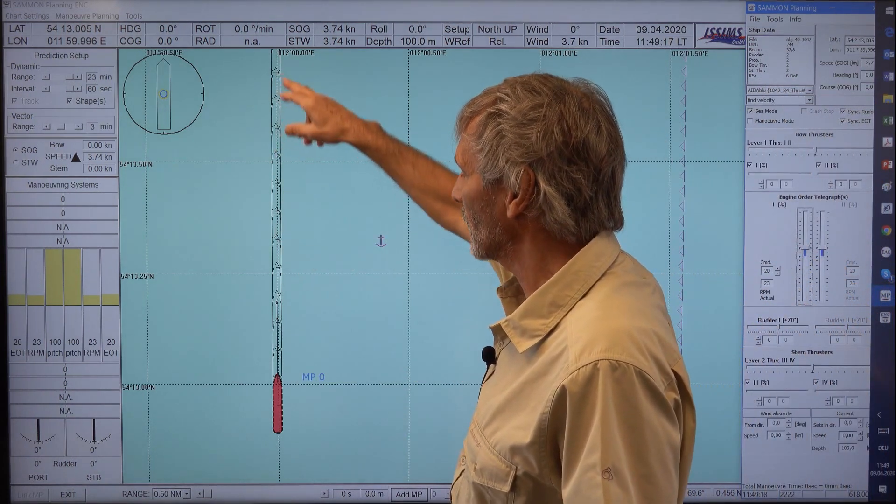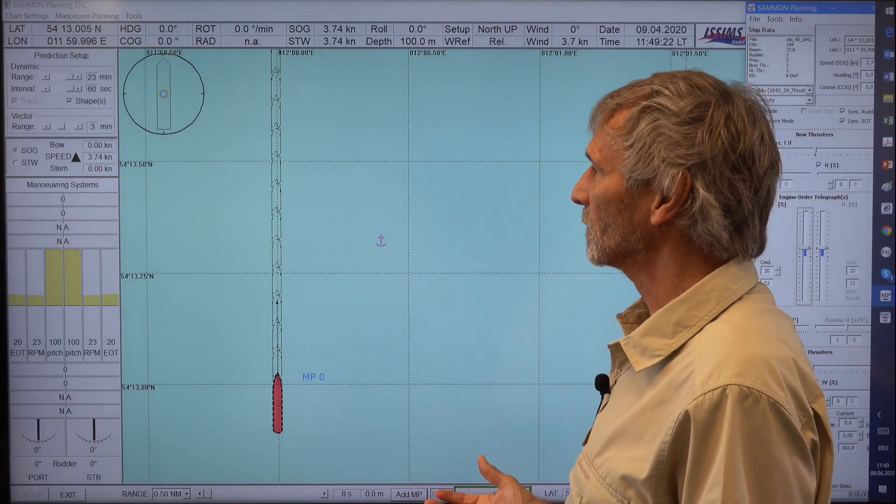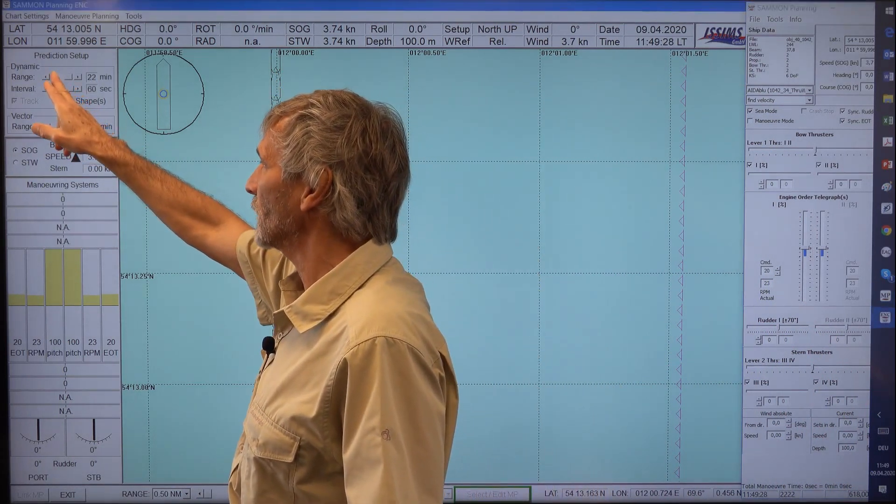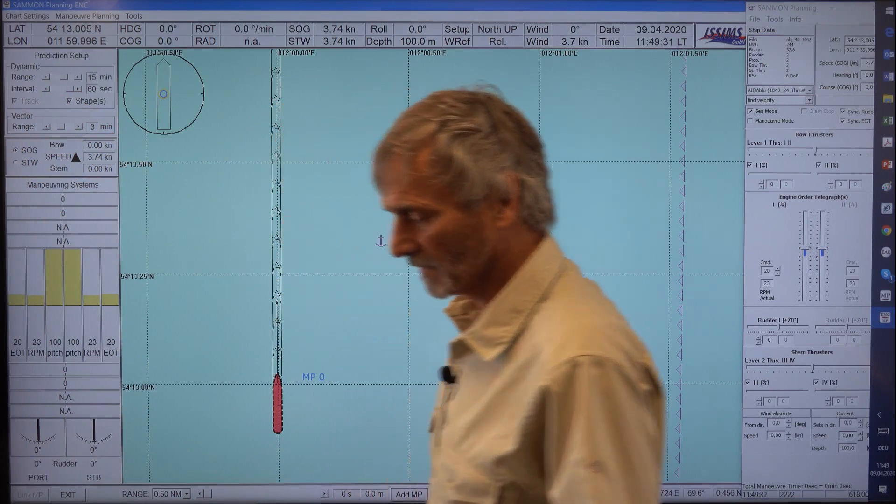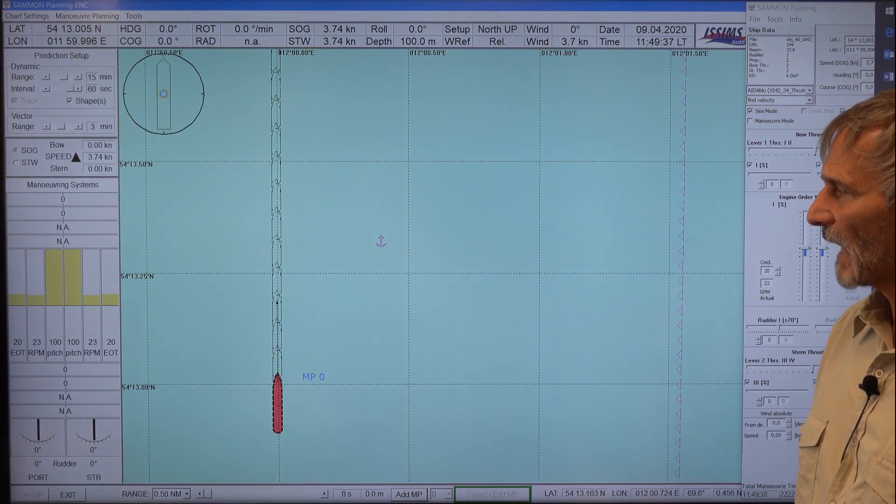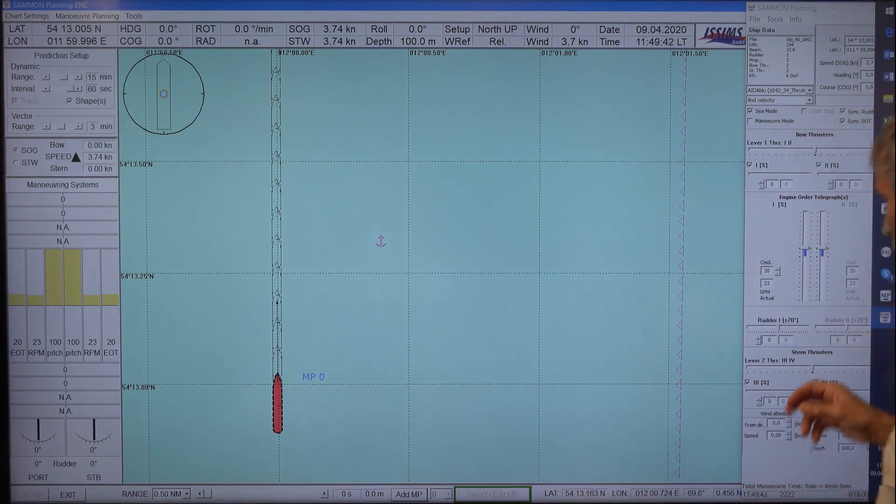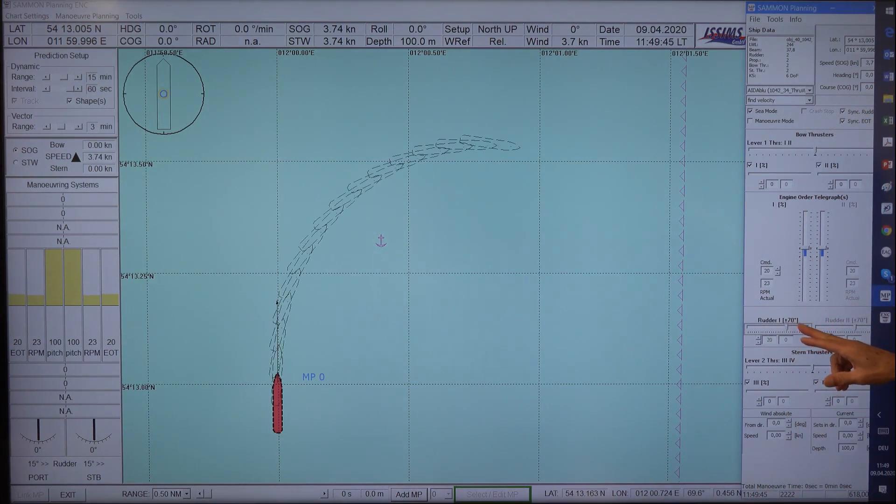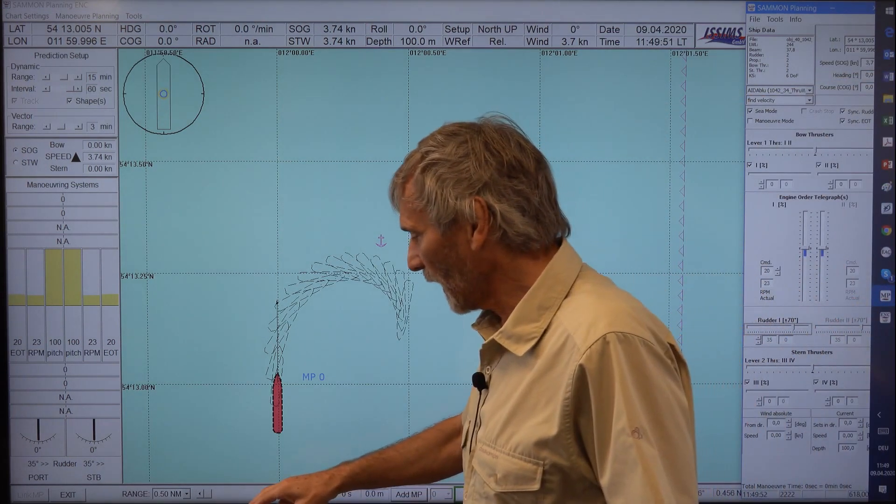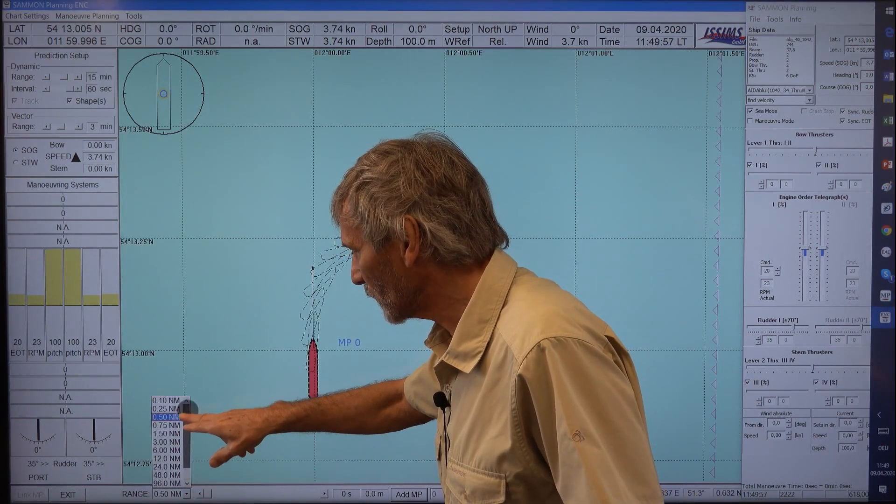And you see here are the ship shapes for the position every minute. So you can display these shapes up to 23 minutes because that is the cycle where the fast time simulation engine is running. So for pivot point we need to turn. So we go with our rudder by 35 degrees to starboard and I make it so we have it here, so I make it a little bit bigger so you can see it in more detail.